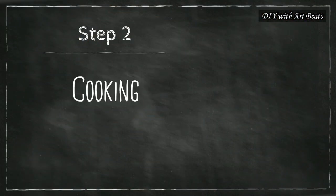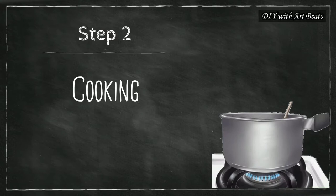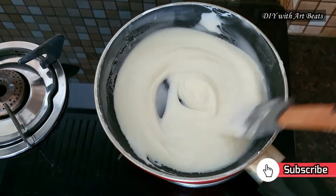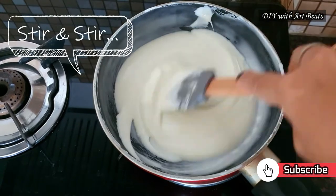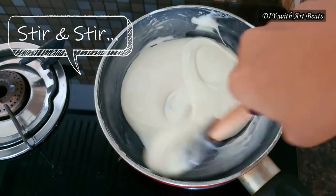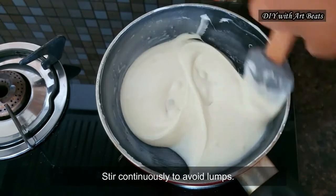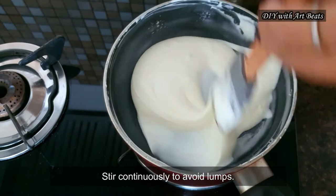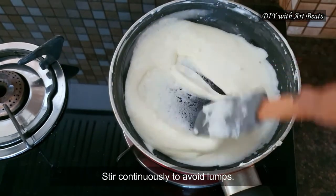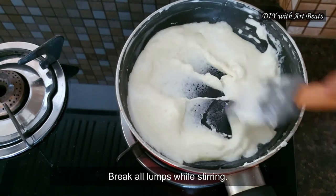Now our next step is cooking this mixture. Keep the gas on low flame and start cooking this mixture. You have to continuously stir the mixture while cooking to avoid any lumps. Cook it evenly from all the sides also and try to flatten out all the lumps with the help of this spatula.